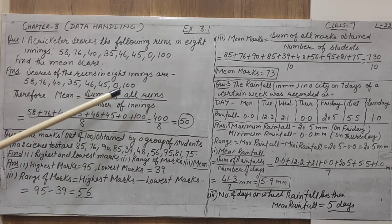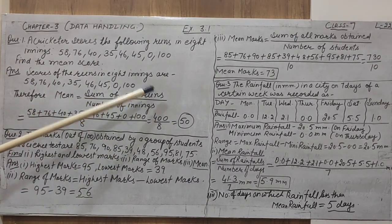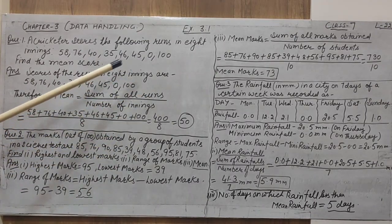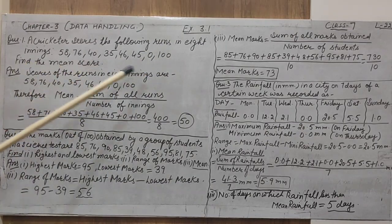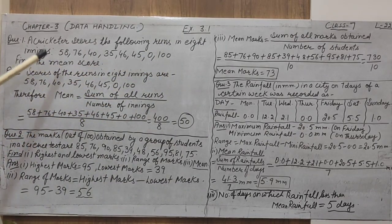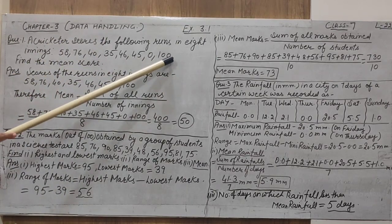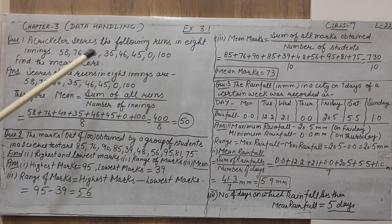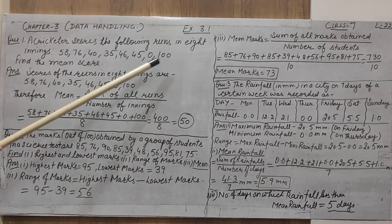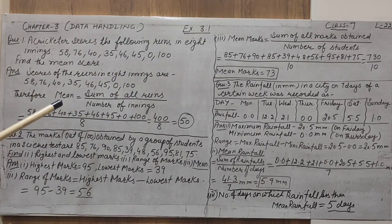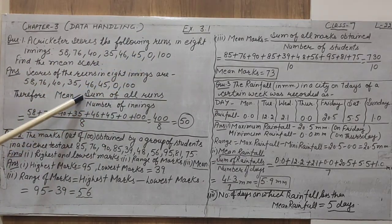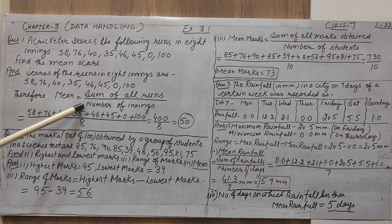The mean of these runs is calculated using the formula: sum of all observations divided by number of observations. Here we write sum of all the runs divided by the number of innings. All the digits are of the same type — all are runs.